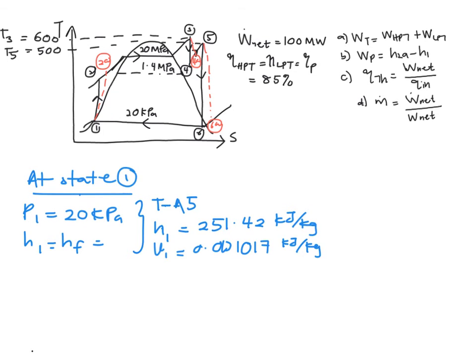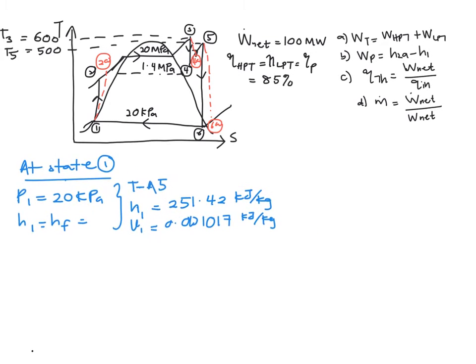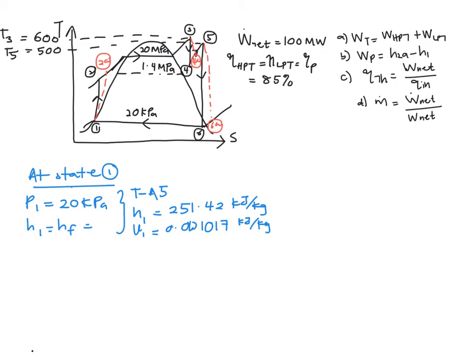Now we move on to our state 2. So at state 2, you are given P2 which is 20 megapascal, and that you know that you can make use of work of your pump, which is work 1-2 is equal to specific volume at 1, P2 minus your P1.